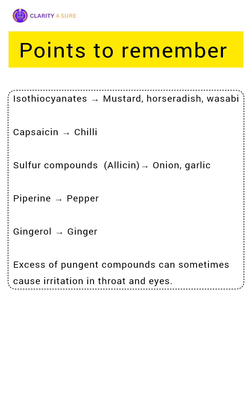Horseradish and wasabi also contain isothiocyanates, just like mustard. So remember, different crops have different chemical compounds for pungency. This is a very common exam question, asked in multiple examinations, so make sure you remember the name of the compound and the crop with which it is associated.